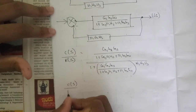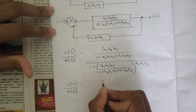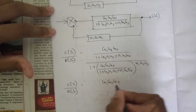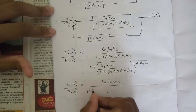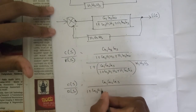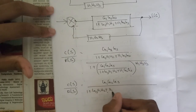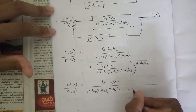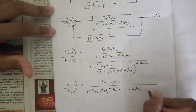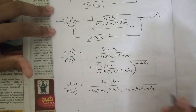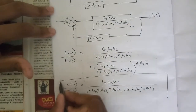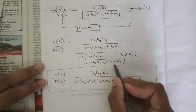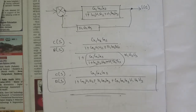Taking the LCM in the denominator again and cancelling those terms, what remains is: G1·G2·G3 divided by (1 + G3·h1·h2 + h1·G2·G3 + G1·G2·G3·h1·h2·h3). This is your final transfer function after solving and after cancellation of those terms.